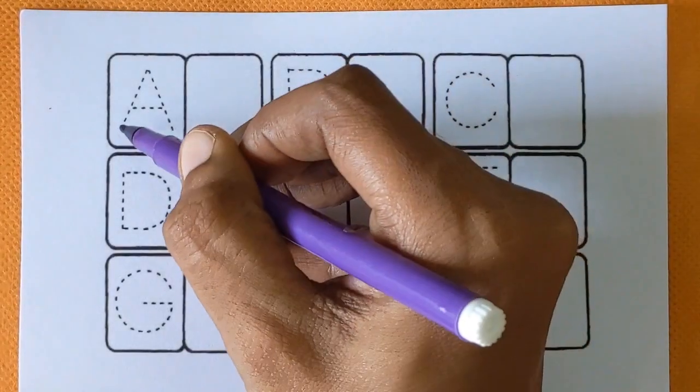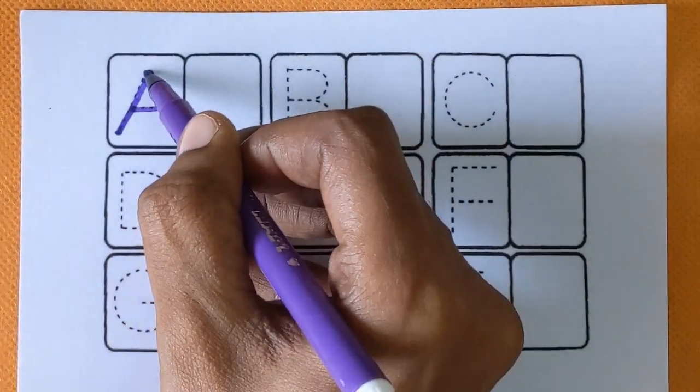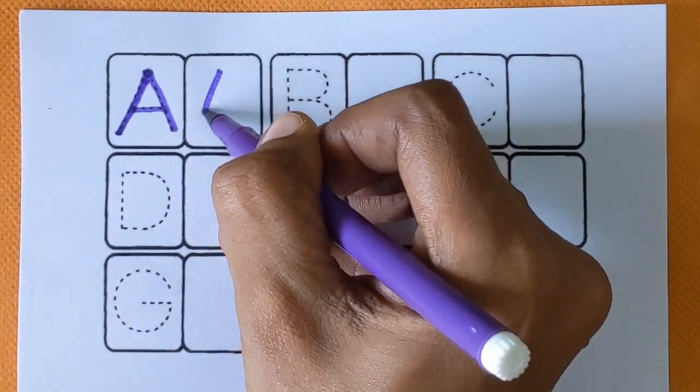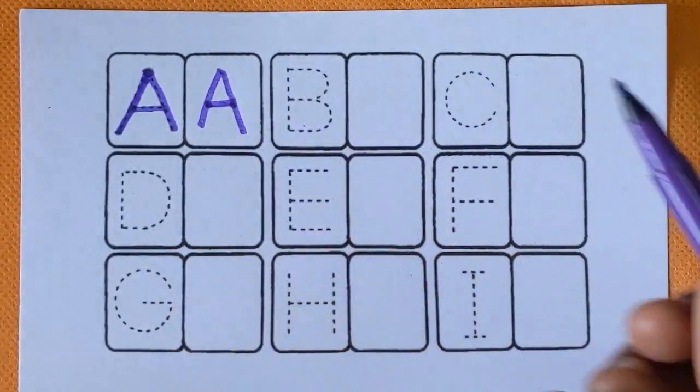At first A, A for alligator and A for apron, violet color.